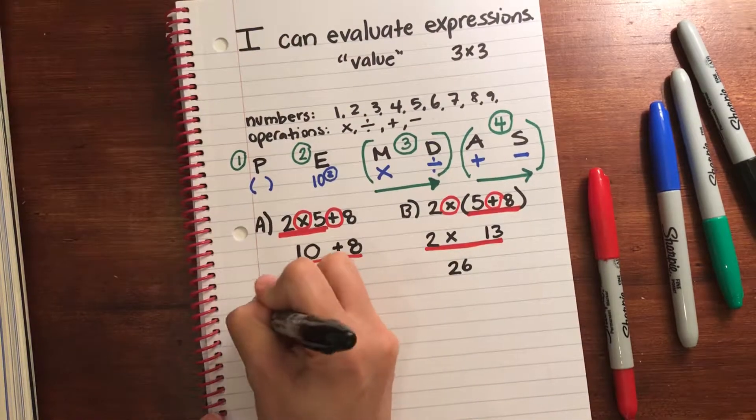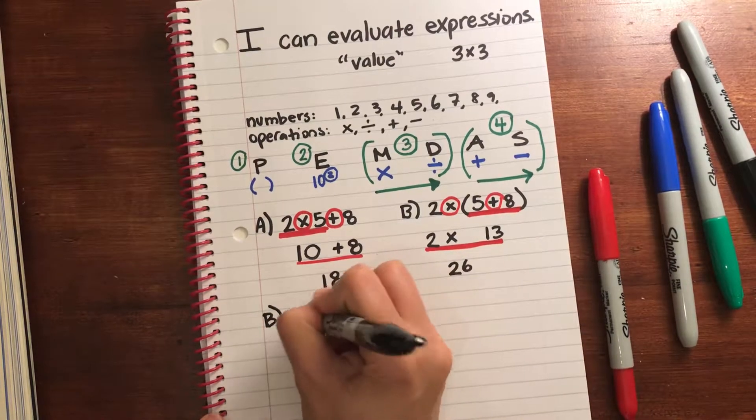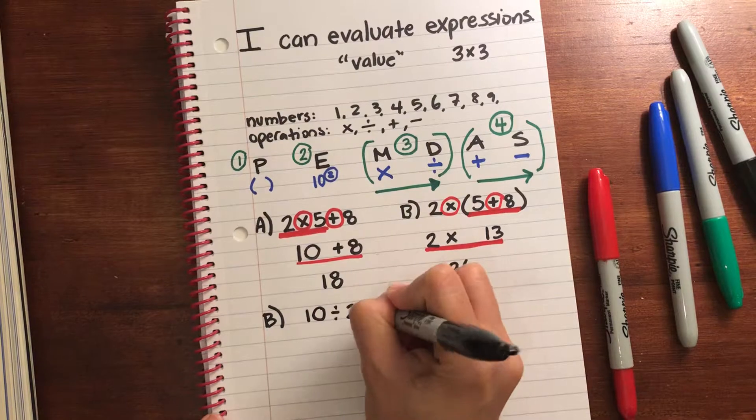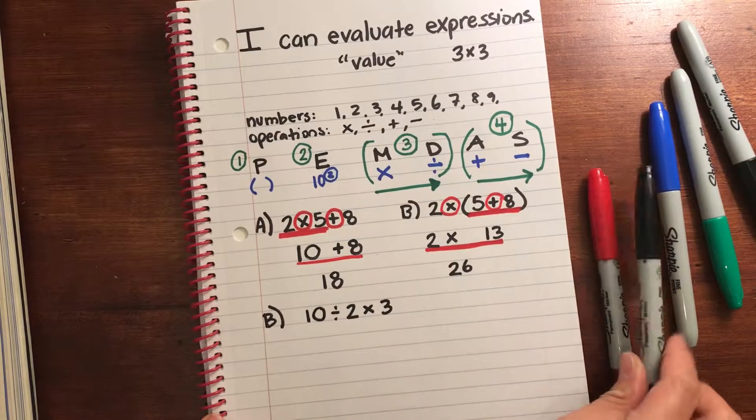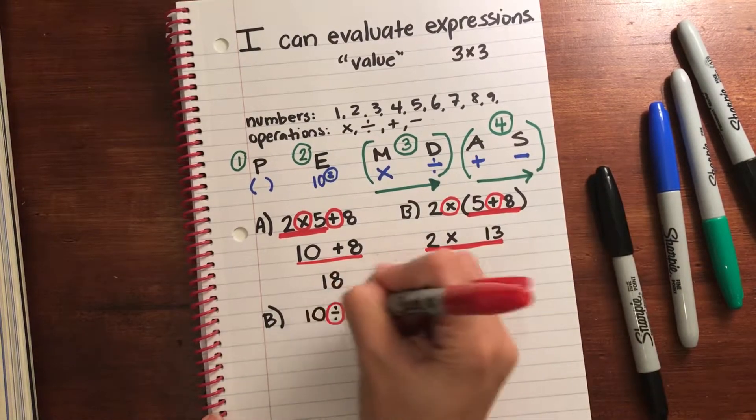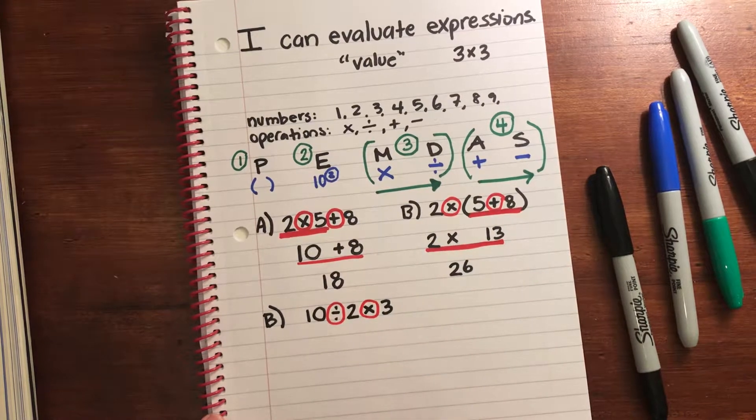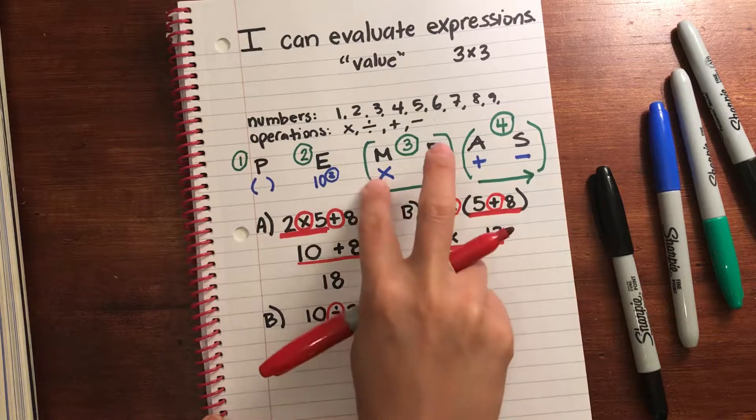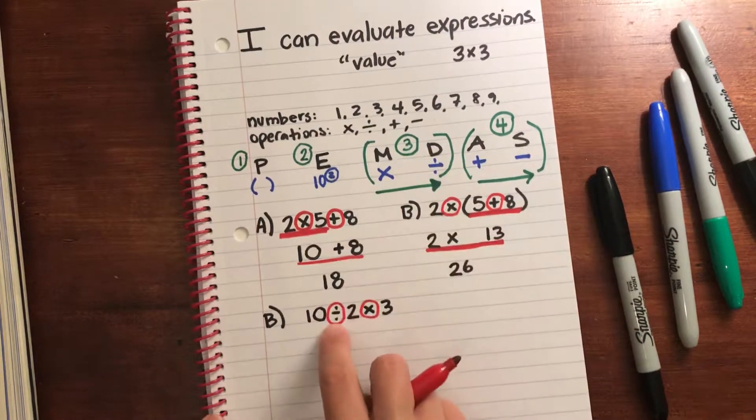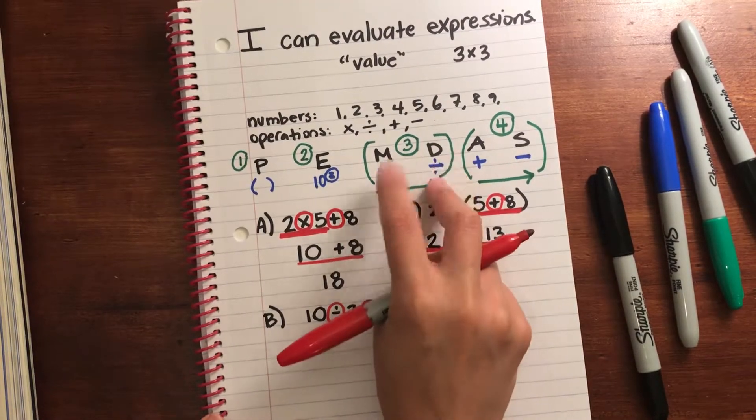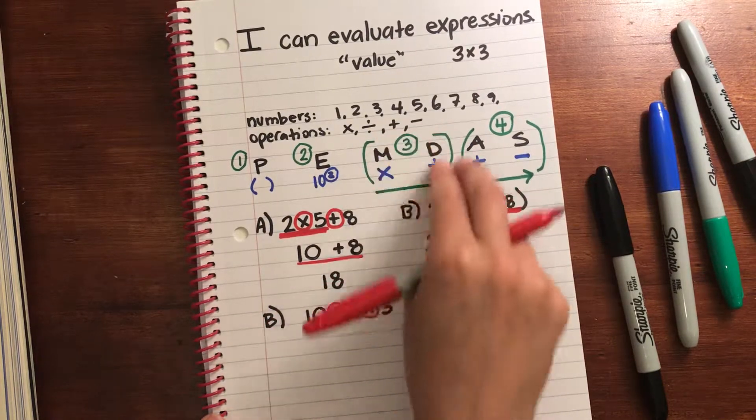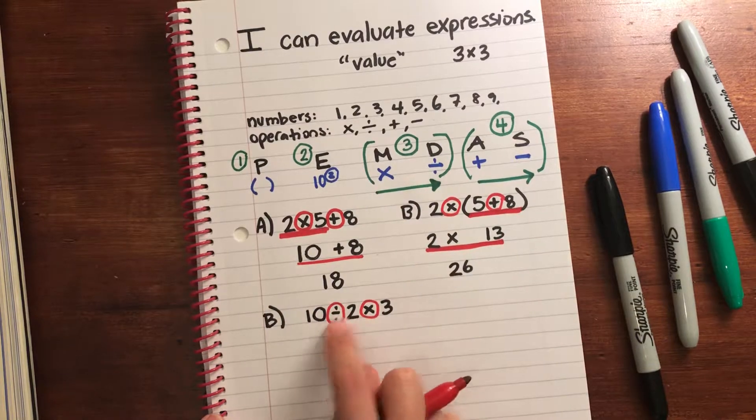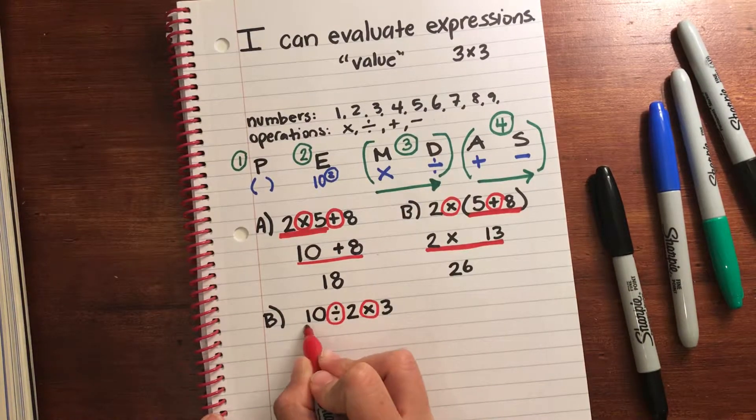All right, let's look at a different one. Let's do 10 divided by 2 times 3. Okay, circle your operations. I have a division and a multiplication symbol. Any parentheses? Nope. Exponents? Nope. Multiplication? Yes. Division? Yes. Remember, multiplication and division, they're in the same grouping. So whichever comes first from left to right. Division is further left. I'm going to solve that first. Underline what you're solving for. 10 divided by 2 is 5.